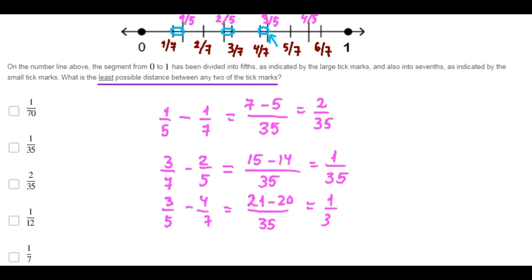Finally, the least possible distance is one over thirty-five. Choice B is correct.